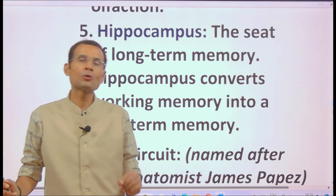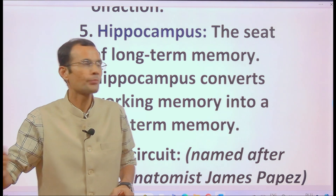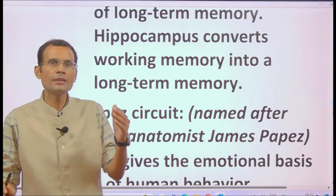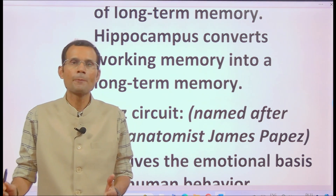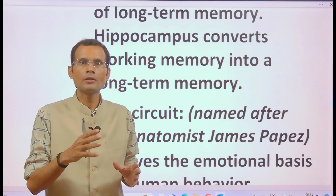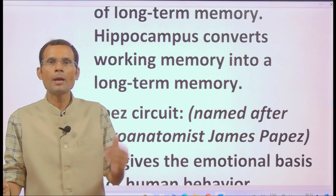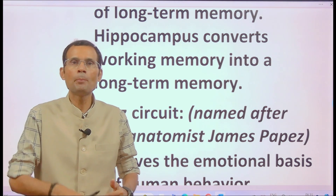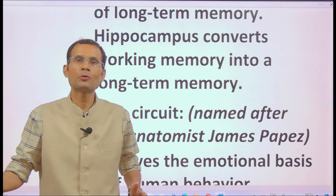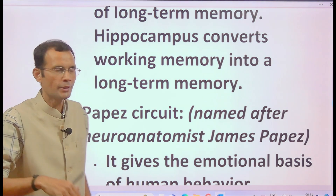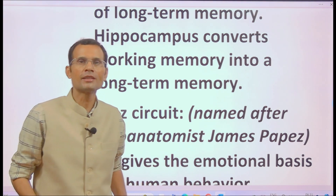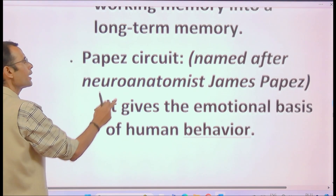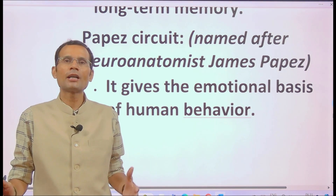The hippocampus is the seat for long-term memory — it converts working memory into long-term memory. To summarize key structures and functions: hypothalamus controls the ANS and is connected to other limbic parts; emotions influence ANS function via the hypothalamus, controlling heart rate, blood pressure, and GI movements; amygdala is the emotional window; hippocampus is the seat of long-term memory.